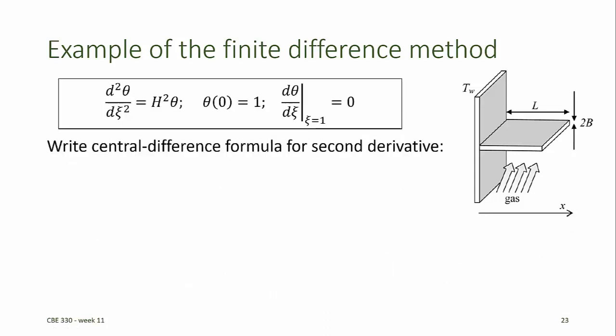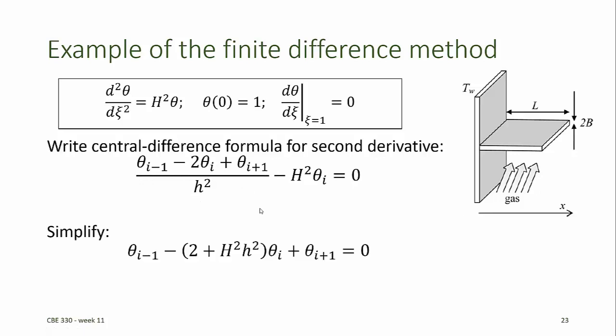To solve this using the finite difference method, we first write the central difference formula for the second derivative and then substitute that into the defining equation. We can simplify this by multiplying by little h squared and combining the terms containing like values of theta.